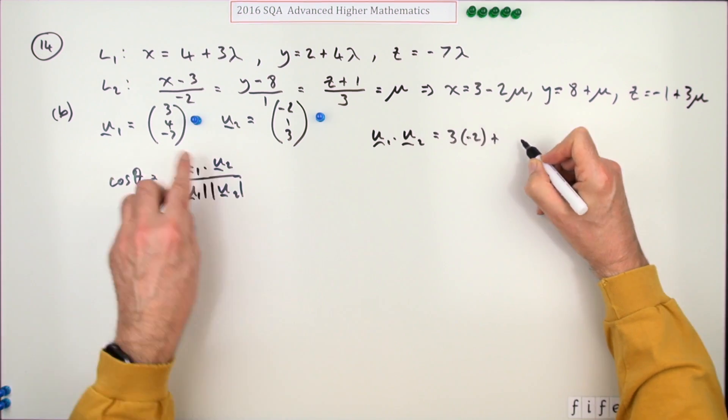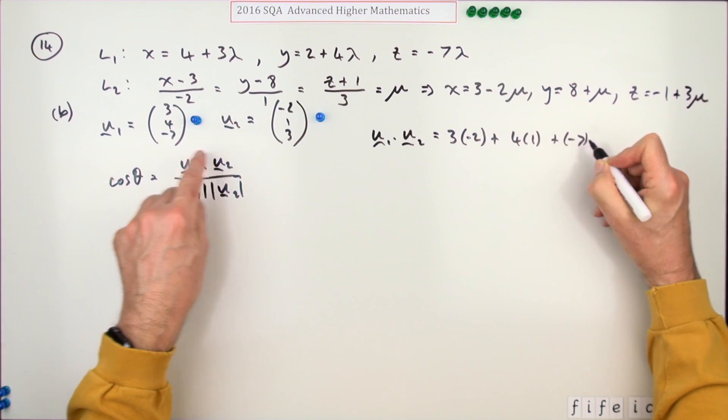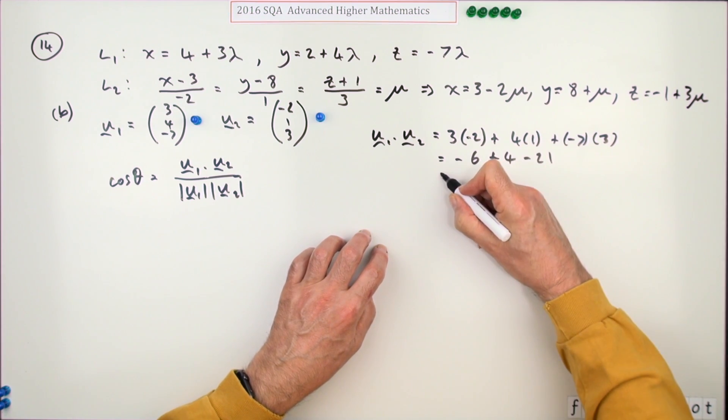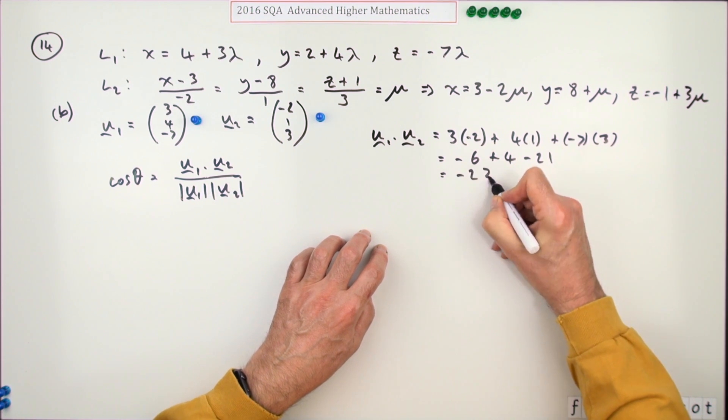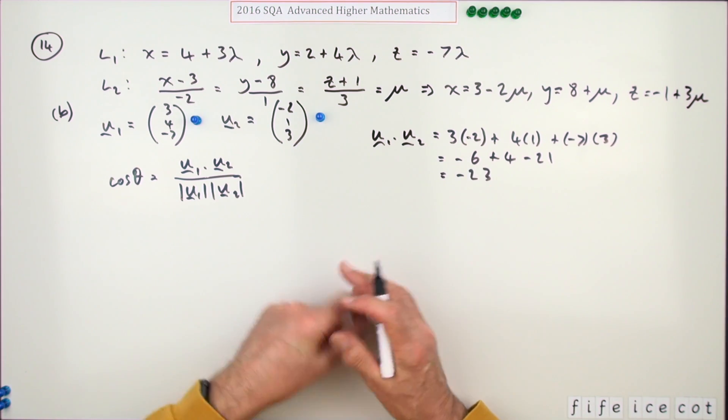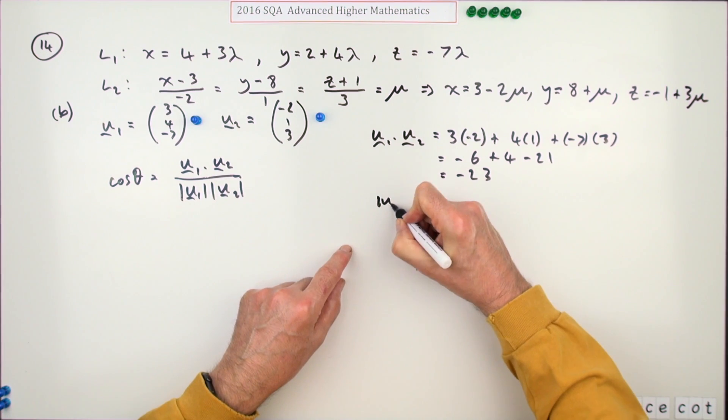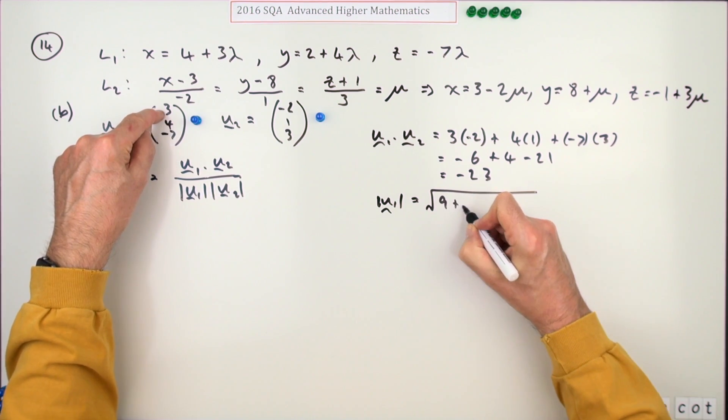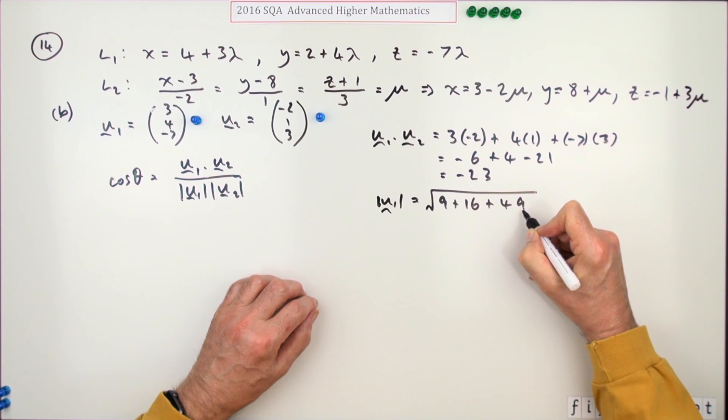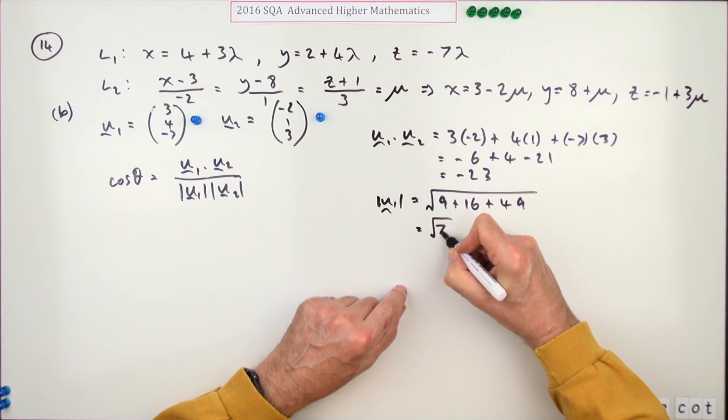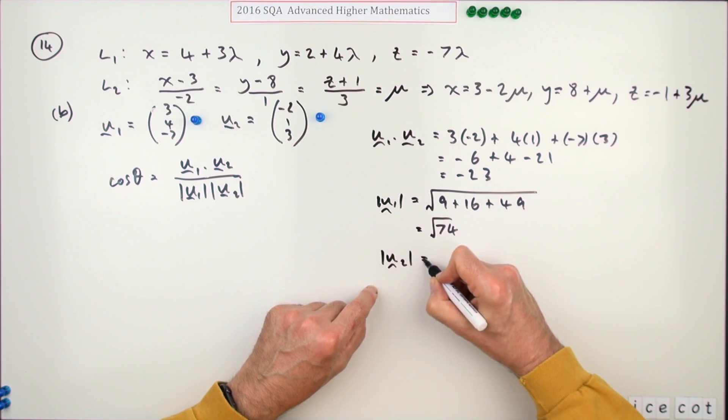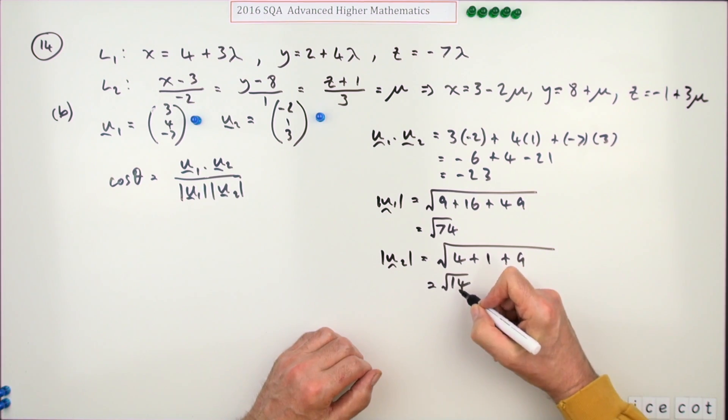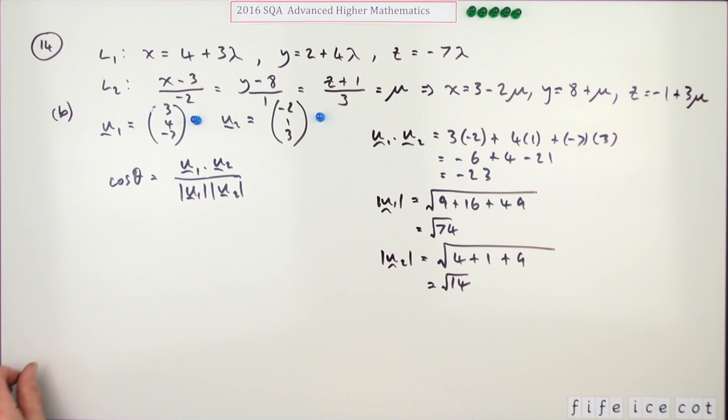What's the scalar product of u1 and u2? 3 times negative 2, plus 4 times 1, plus negative 7 times 3. That's negative 6, and 4, and minus 21, so that's another 2 away, minus 23. That doesn't get a mark. Magnitude of u1 will be the square root of 9 plus 16 plus 49, which is root 74. Magnitude of u2 is the square root of 4 plus 1 plus 9, that's root 14. Getting the 3 of those gets you the next mark.